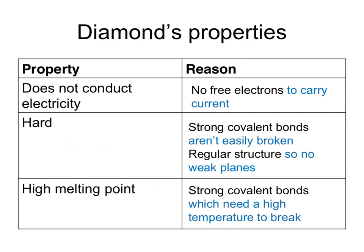The properties of diamond we need to know are that it doesn't conduct electricity because there are no free electrons to carry the current through the diamond structure. Diamond is hard because it has strong covalent bonds which aren't easily broken, and its regular structure means there are no weak planes or weaknesses. It has a high melting point because the strong covalent bonds need a high temperature or a lot of energy to break them.